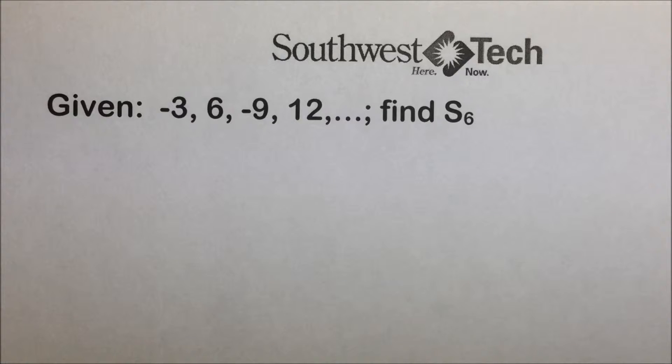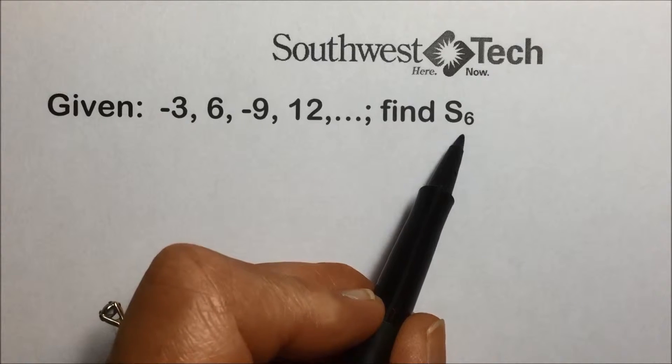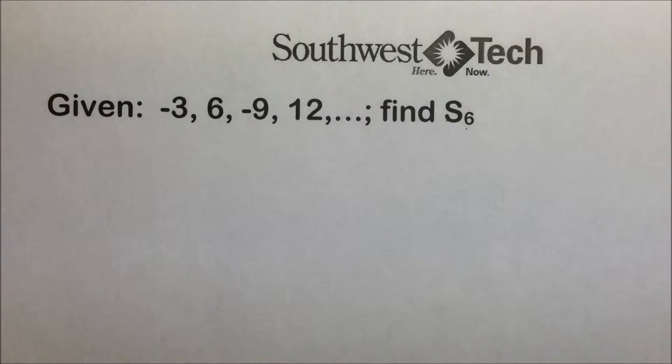If they have a partial sum, and they indicate the number of terms that they want to add together, this is called a finite series, and it's denoted by S sub n. Well this is S sub 6, which is the symbol for the series or the sum of the first six terms of this sequence.